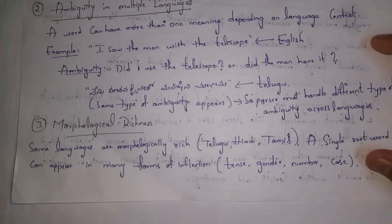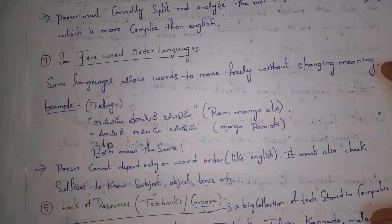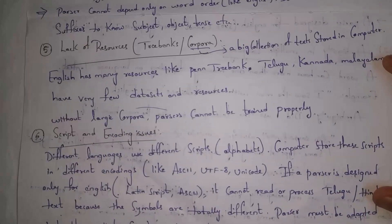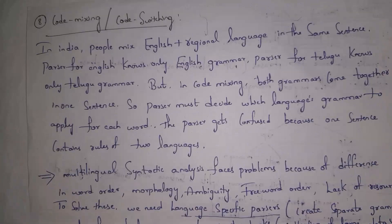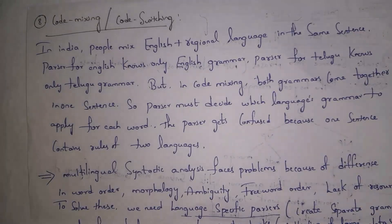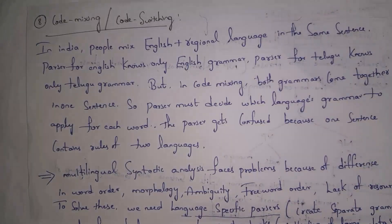Because of all these issues — different word orders across languages, handling ambiguity differently, morphological richness varying between languages, free word order in some languages, lack of resources for many languages, different scripts and encodings, and code switching — parsers cannot handle multiple languages. To overcome these problems, we need to use language-specific parsers that can handle multiple languages. We need to train parsers not only with English but also with various other languages, by providing various kinds of features and resources, so that the parser can understand different languages.